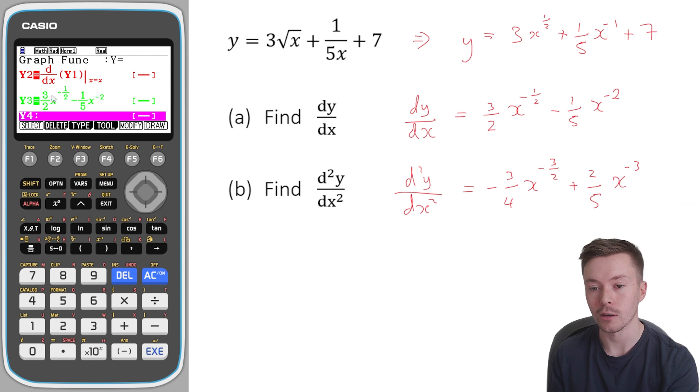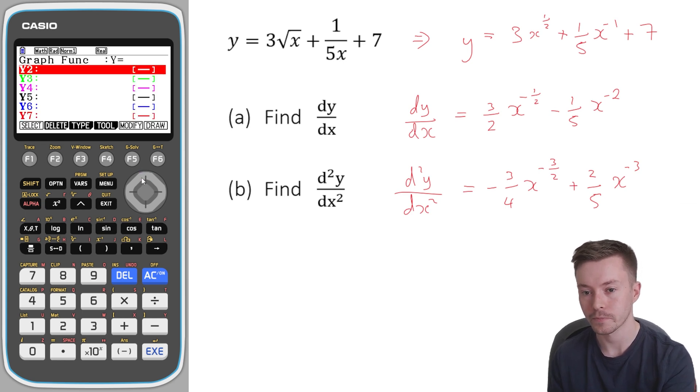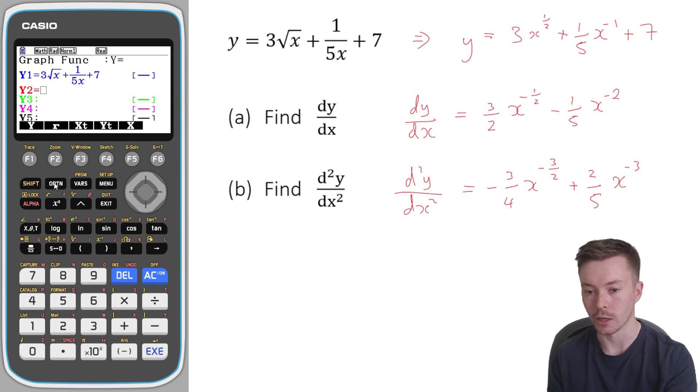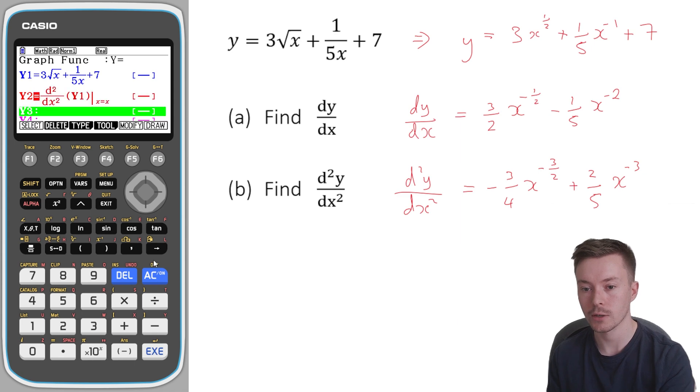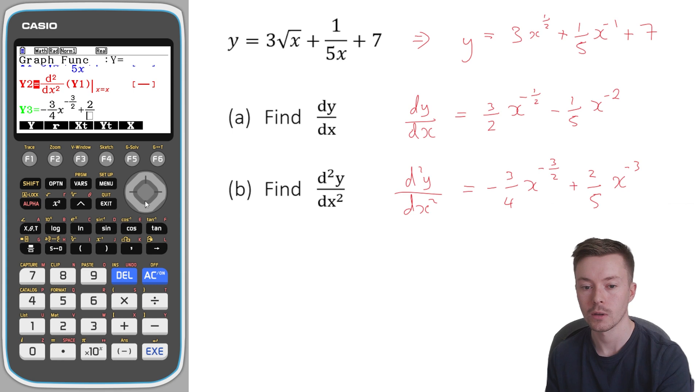Now I'm going to do exactly the same thing for the second differential. So I'm going to delete these two again, so to avoid any confusion about the graphs. And I'm going to press right again. I'm going to do options, calculate, second differential. And then I'm going to press exit, exit y1, because my function is in the y1 section. And then x is equal to x, execute. And I'm going to type in, without making any mistakes this time, minus three quarters. I'm going to type in my second differential function. Minus three quarters, x to the power of minus fraction button three over two,